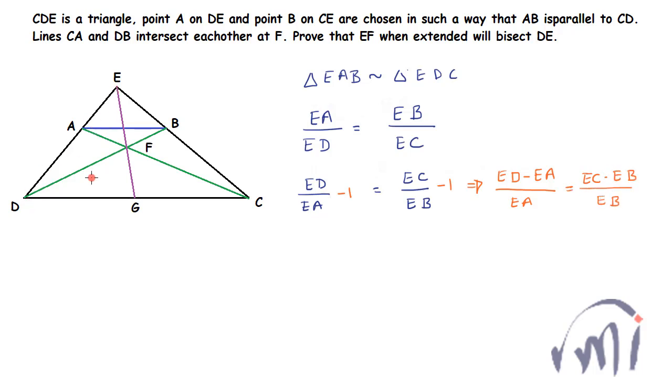ED minus EA is equal to AD, so from here I'll get AD divided by EA is equal to EC minus EB. EC minus EB is equal to BC, so this will be BC divided by EB.